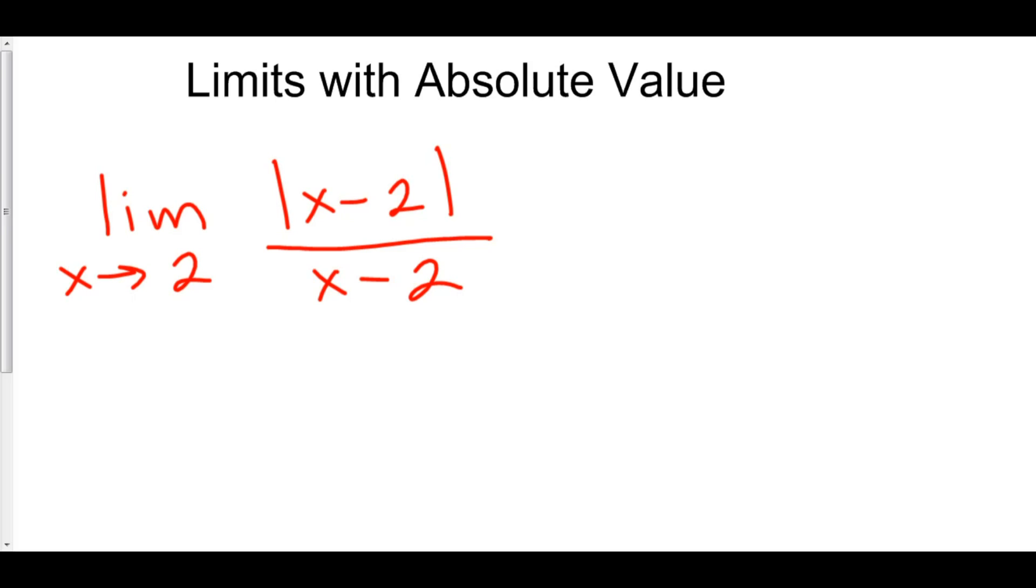Well, it is possible to rewrite the absolute value as a piecewise function from both the left-hand side of 2 and the right-hand side of 2, but that's way too complicated, and there's a much easier way to do it, so we're going to skip that step as well.